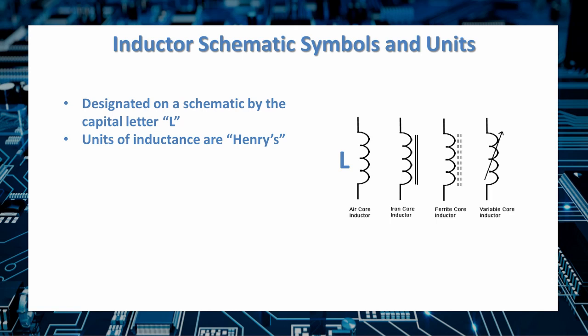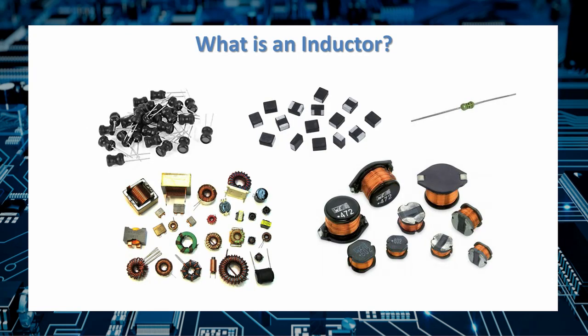Here you see the various symbols that are used to represent an inductor on a schematic. The symbol itself will tell you what type of core the inductor has. Different types of cores impart different characteristics to the inductor. Inductors on a schematic are usually designated by a capital letter L. The units of inductance are measured in Henrys. You'll most commonly find inductors in micro-Henrys or milli-Henrys.